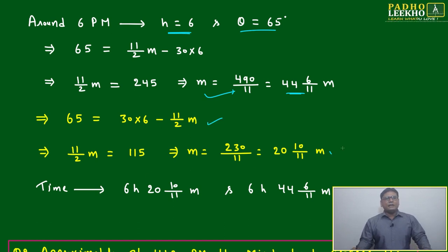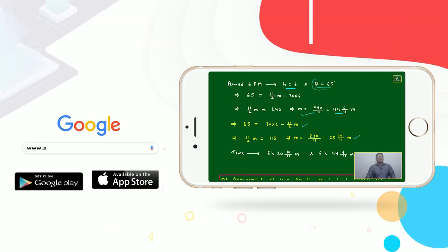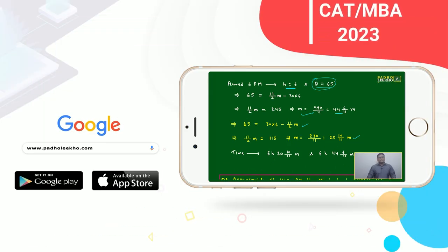This means there are two times on the watch or clock when the angle between the hands is 65 degrees: 6 hours 20 10/11 minutes and 6 hours 44 6/11 minutes.